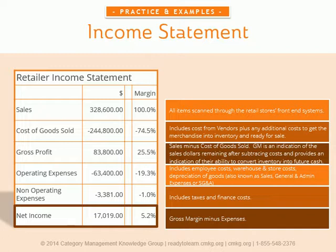Retailers turn to the gross margin as an indication of the sales dollars remaining after subtracting the costs of purchasing merchandise. It provides managers with an indication of their ability to convert existing inventory into future cash. To figure gross margin, the gross profit from the income statement is divided by the business's net sales, also found on the income statement. The higher the number, the better.